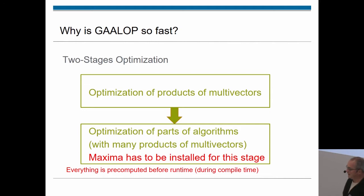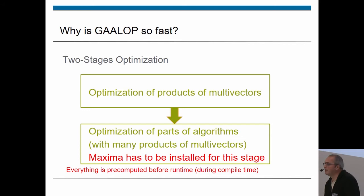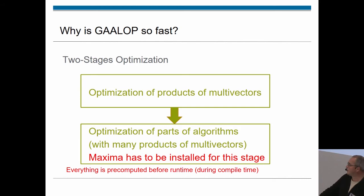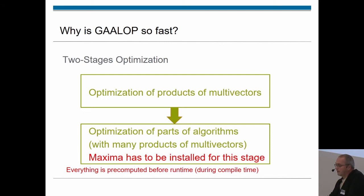GALOPweb is fast, and I would like to convince you about the reason for this speed. In principle we have two stages of optimization. In the first step we optimize on the level of products of geometric algebra. Then in a second step we optimize complete algorithms or parts of algorithms, using Maxima internally for symbolic simplification.